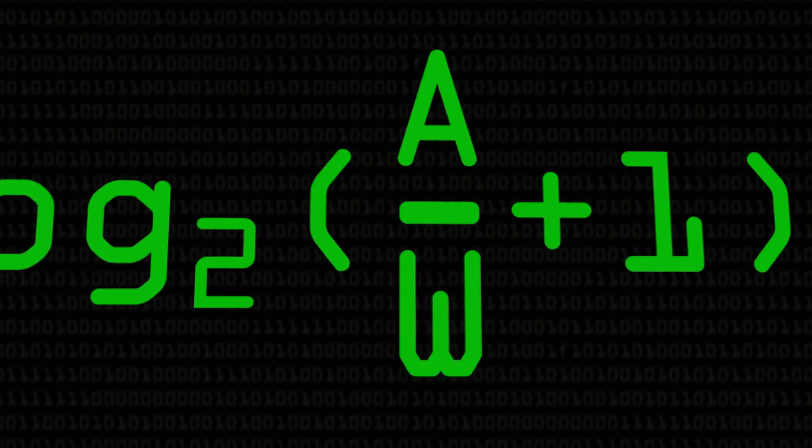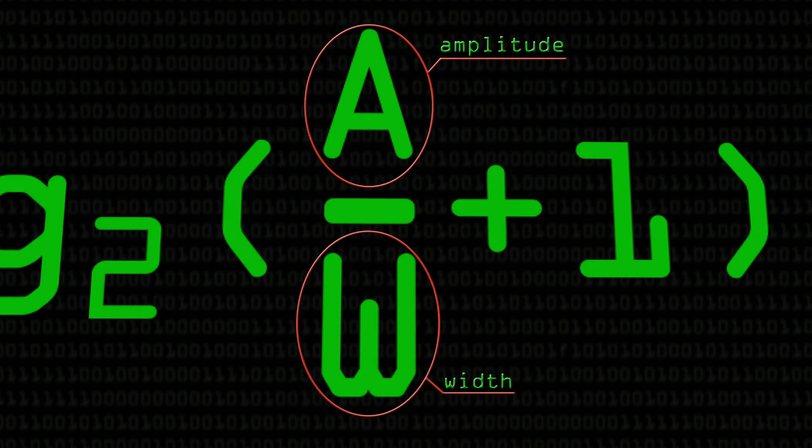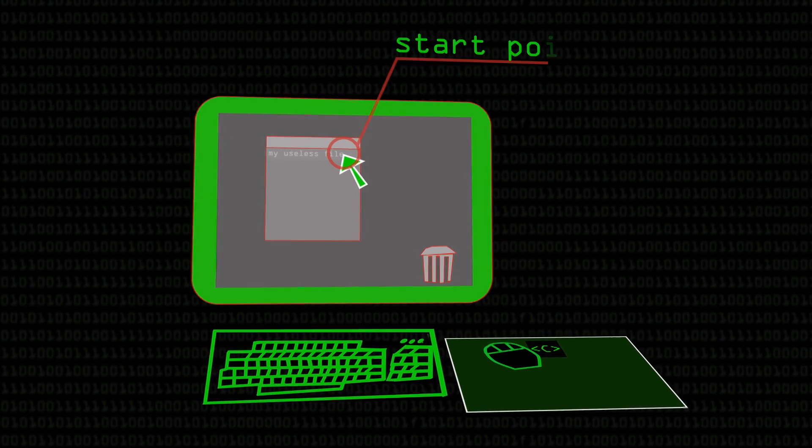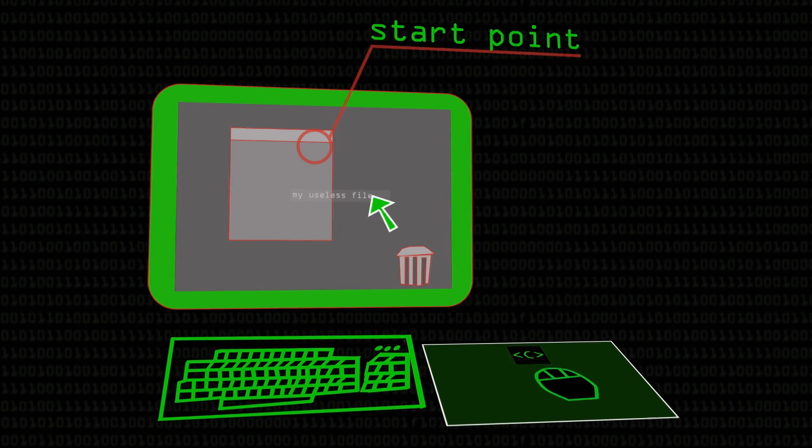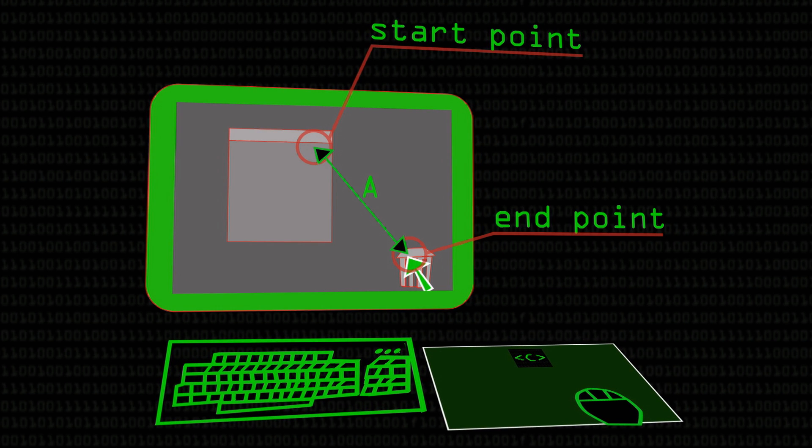What we're interested in here are the variables A and W — amplitude and width — and these describe the target. The amplitude describes how far away the target is from your start position, and the width describes the width of the target. It's essentially how big a landing pad you've got, and how accurate you need to be when you get to that target.